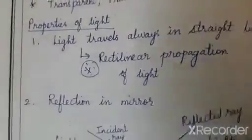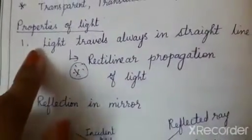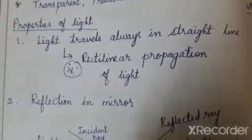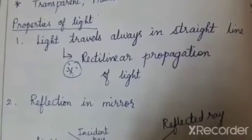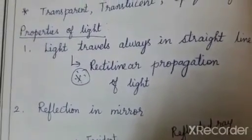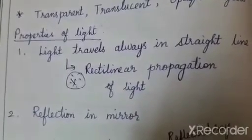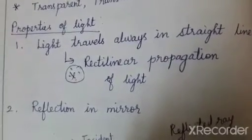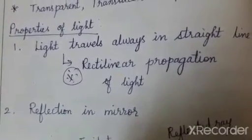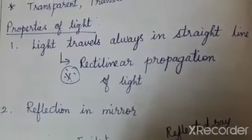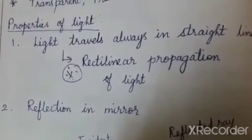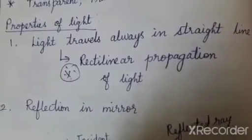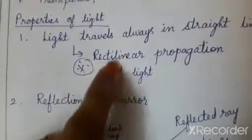The first property is that light always travels in a straight line. This straight-line path of light is called by another name: rectilinear propagation of light. This is a very important property — light always travels in a straight line, and that straight-line passage is called rectilinear propagation.